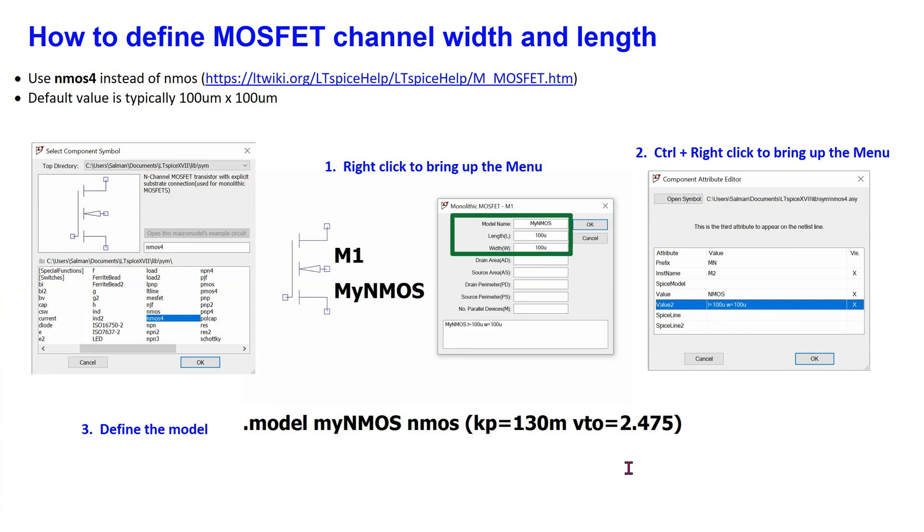Sometimes, it is desirable to specify the MOSFET channel length and width. This can be done in LTSPICE by selecting the monolithic MOSFET component, which is available as nMOS4 below nMOS. Place this component on the schematic and then right-click to bring up the menu shown here. The length and width can be specified here.